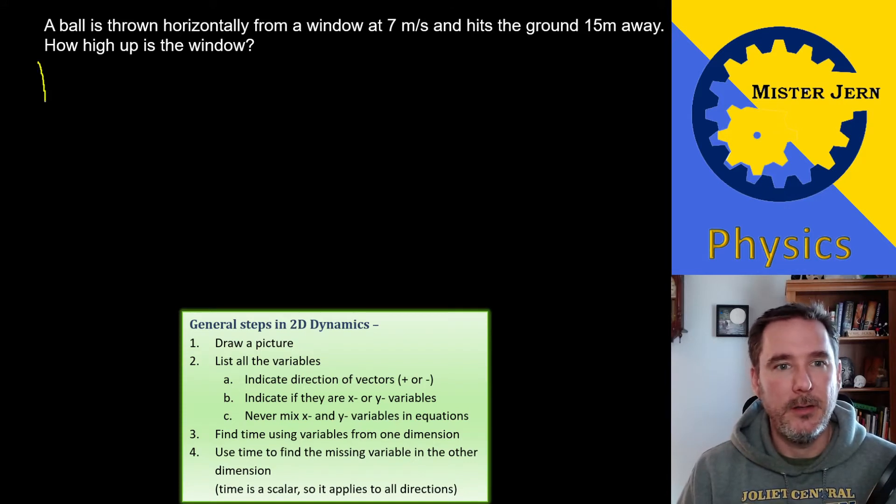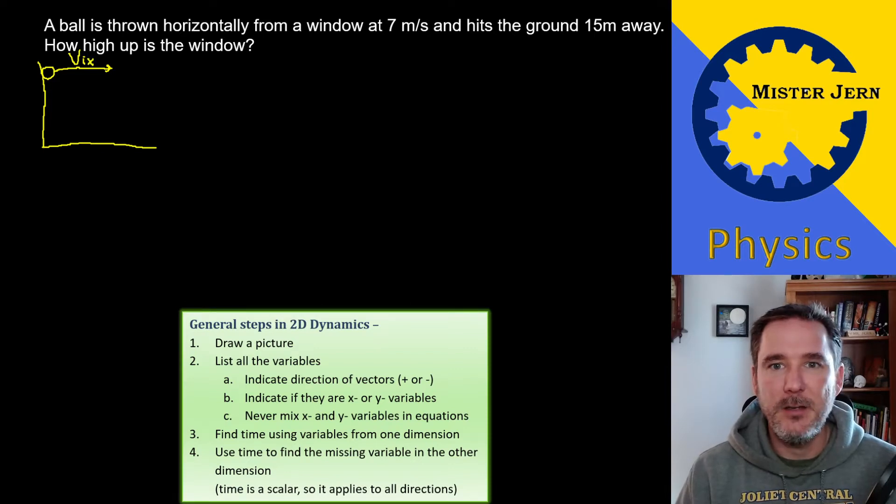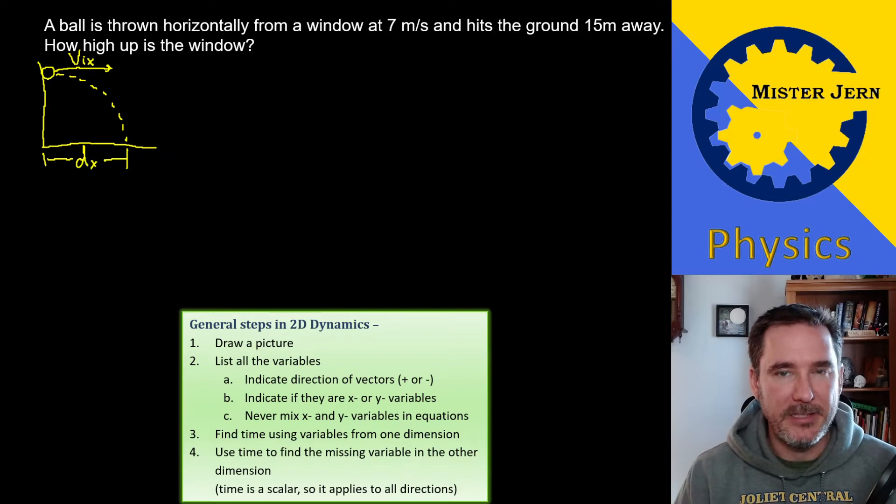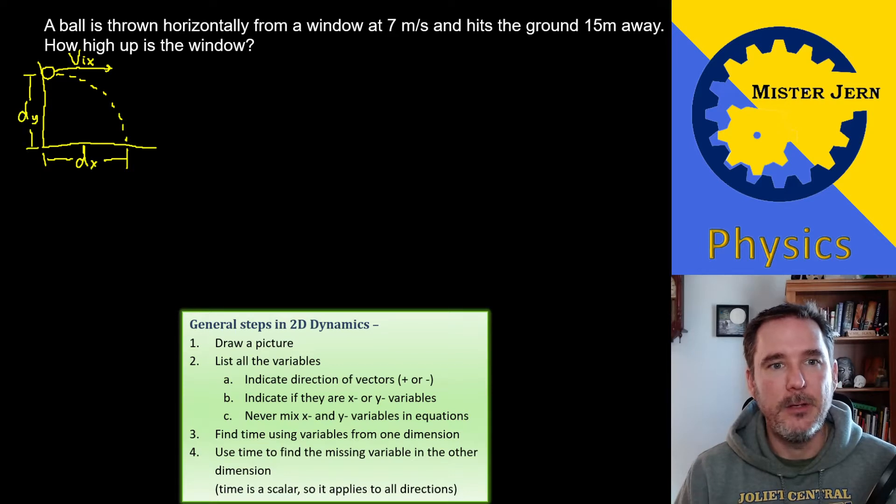Alright, so let's draw that. Here's a little drawing. It's pretty terrible but it's just to help us visualize. There's our ball. It's thrown with an initial velocity in the x direction of 7 meters per second. It's gonna follow this general path and we know it's going to hit a certain distance away along the x axis, the displacement in the x axis. And what we're trying to find out is how high up is this window, what is dy?